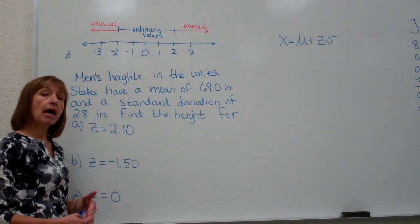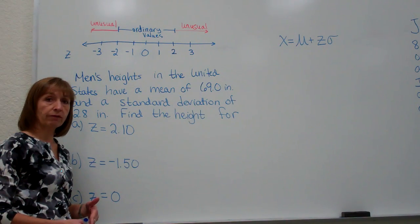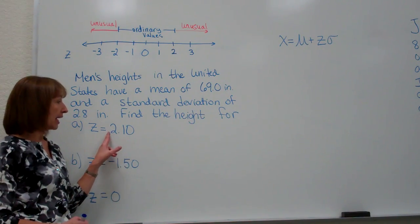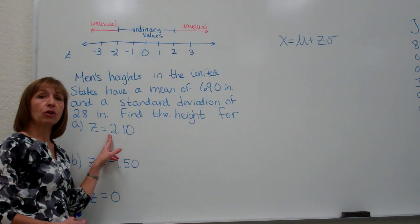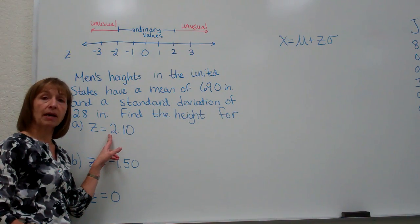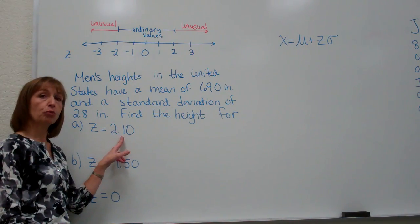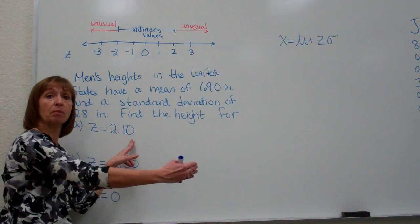Now since z-scores tell us how many standard deviations away from the mean a data value is and on what side of the mean, when I have a positive z-score like in part a I know that my raw score is going to come out to be a number that is bigger than the mean and it's going to be 2.1 standard deviations bigger than the mean.